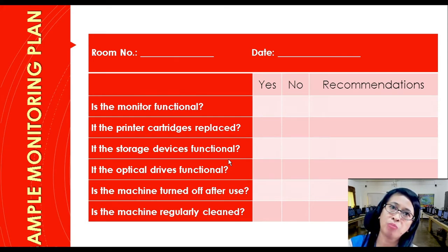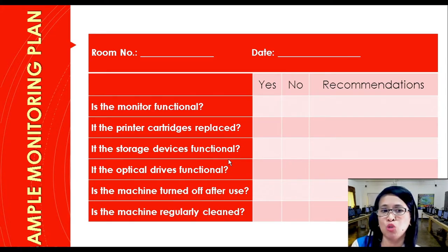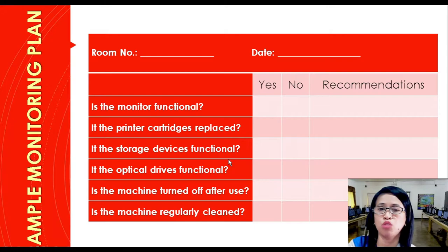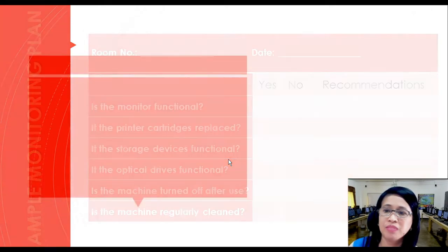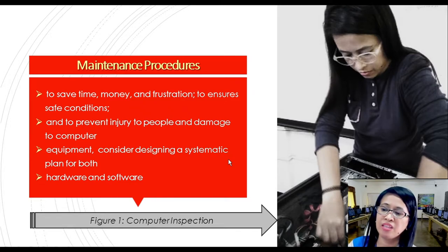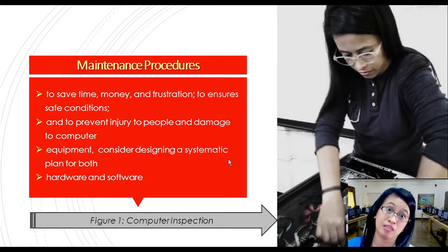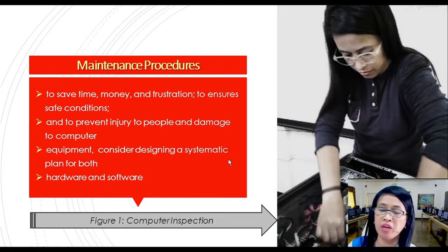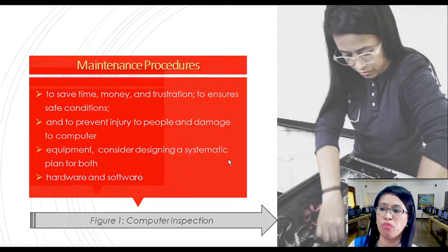Dust is a primary reason why the computer system is not functioning well. You have to remove dust not just from the outside, but also unscrew the body of the system unit and remove dust from inside — you can use a paintbrush. What are the different maintenance procedures? You have to save time, money, and frustration to ensure safe conditions. Prevent injury to people and damage to the computer. You can use ESD (electrostatic discharge) protection and an anti-static mat. Consider designing a systematic plan for both hardware and software — you have to check and inspect those materials.